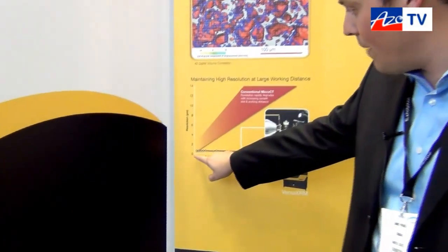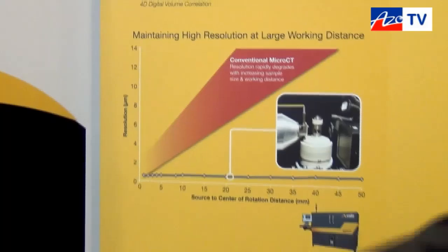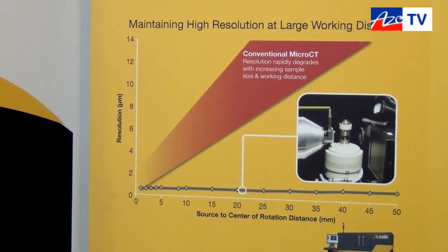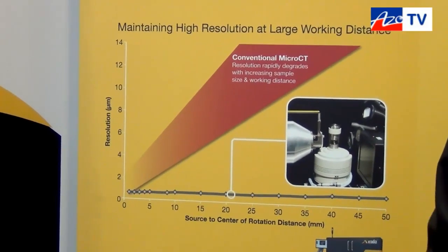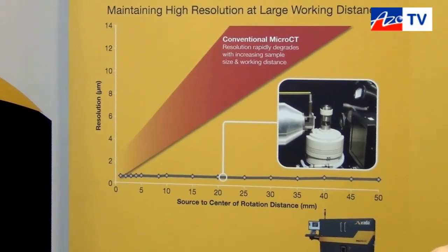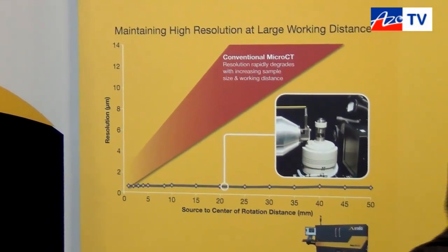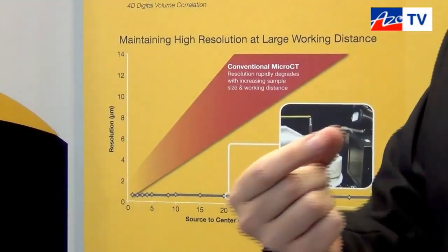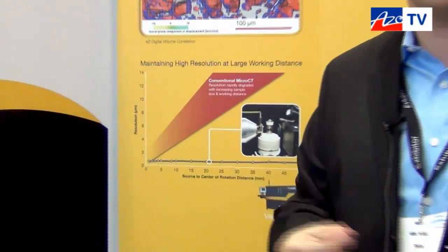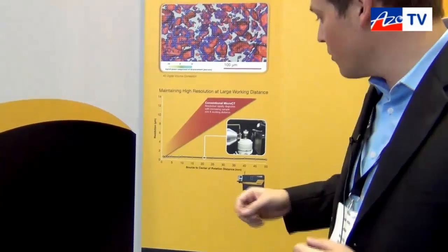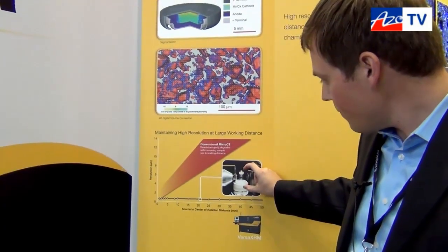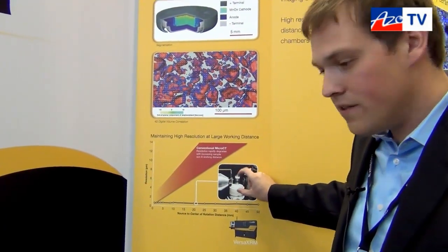We can maintain resolution that's better than 700 nanometers and better than a micron over very large source distances and working distances. We can maintain this over many tens of millimeters, which means you can look at small regions of a larger sample inside, and you can also look at it inside in-situ stages, which are tension, compression, or heating and cooling.